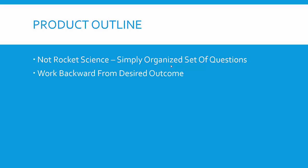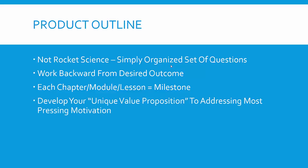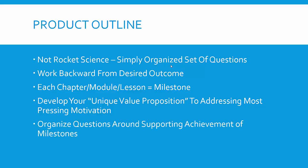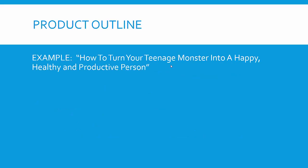Your product outline is not rocket science. It's simply an organized set of questions from high-level milestones down to more detailed questions, working backward from the desired outcome. Define the steps needed to achieve the transformation — each chapter, module, or lesson becomes a major milestone. Develop your unique value proposition addressing the most pressing motivation — that becomes your teaching method, what makes your product different and organized to achieve that desired outcome.